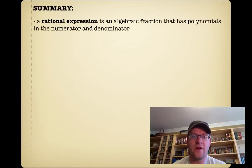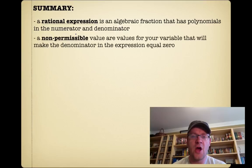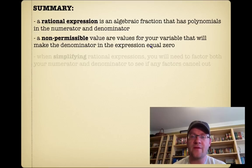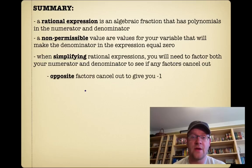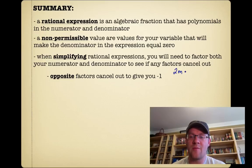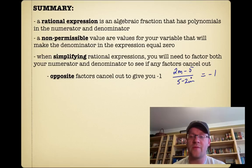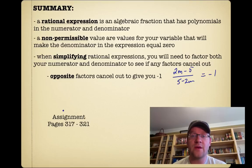In summary: a rational expression is an algebraic fraction that has polynomials in the numerator and denominator. Non-permissible values are values for your variable that make the denominator equal zero, and that's not allowed. When simplifying, factor both the numerator and denominator to see if any factors cancel out, and remember that opposite factors — like 2m minus 5 and 5 minus 2m — cancel to give negative 1. Your assignment is on pages 317 to 321. Good luck, and we'll see you in class.